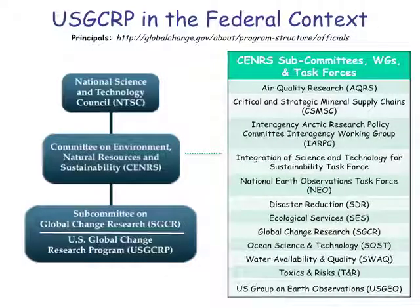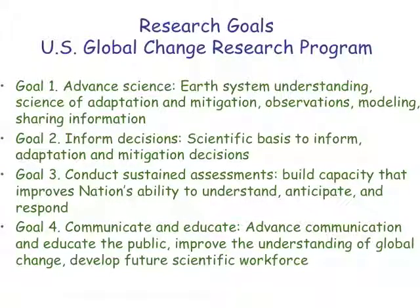There is a mechanism with all sorts of committees and subgroups that are helping coordinate all of this research across all of these agencies. If you look at these titles, you can see geography looms large — that's a big aspect. The goals, briefly: number one is to advance the science; number two is to inform decisions; number three is to conduct sustained assessments; and number four is to communicate and educate the public as well as policy makers. All of that is happening.